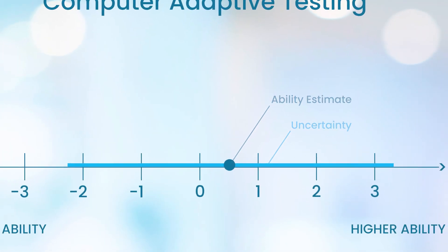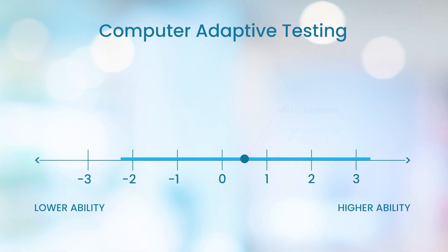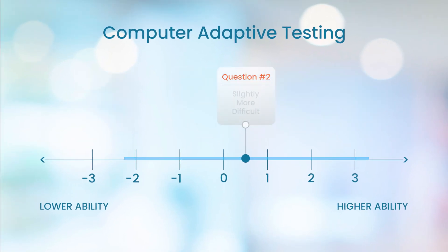Now the key feature of CAT is what happens next. Instead of getting a second question at random, the computer now selects a question right around the test taker's ability estimate.